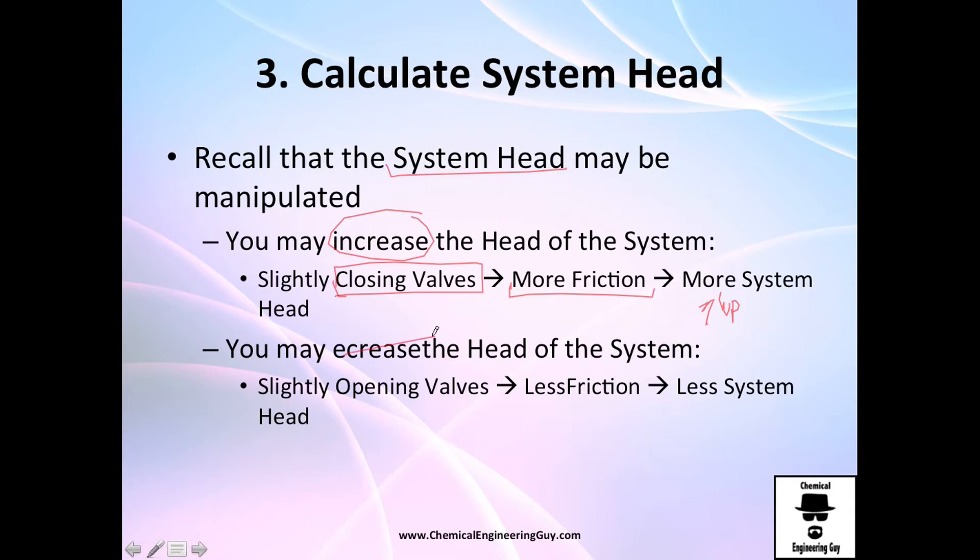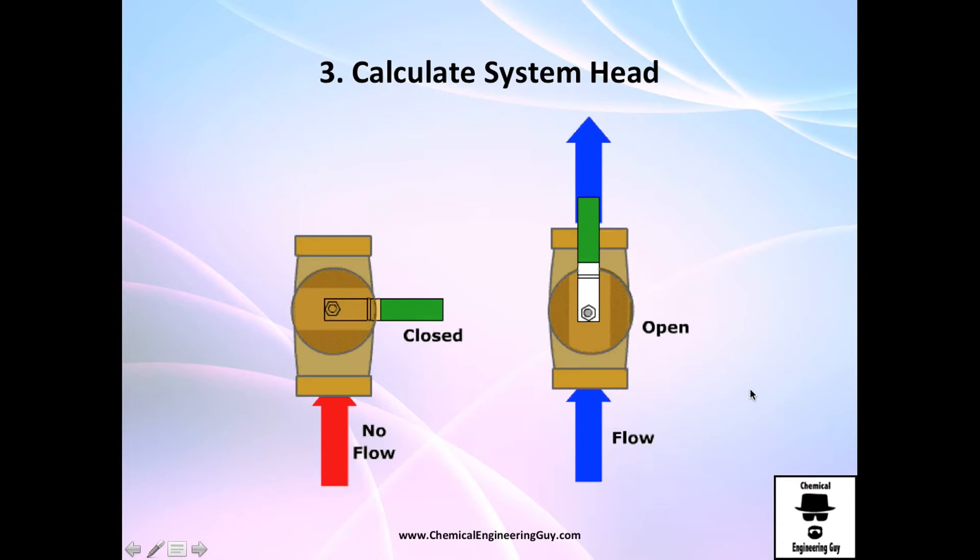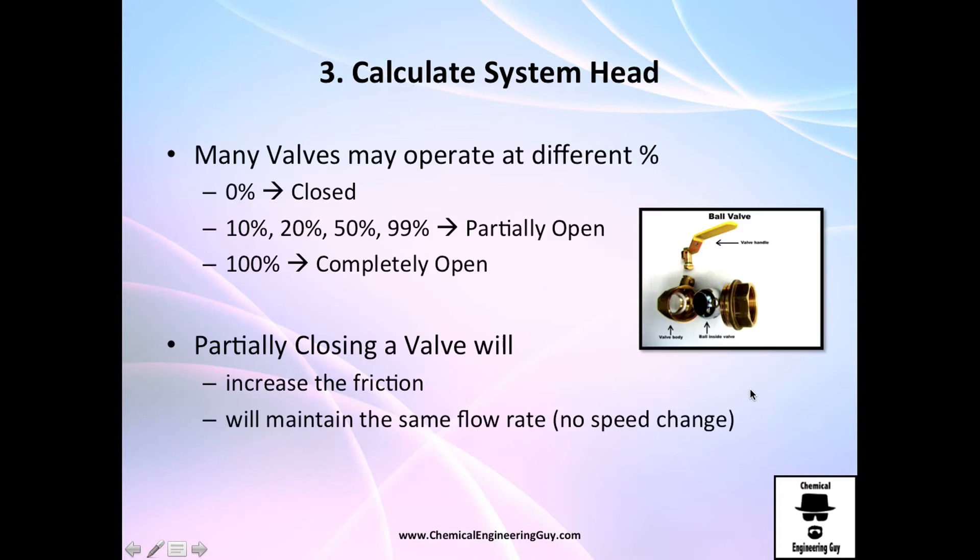You may decrease the head of the system by opening valves - you will have less friction and therefore less head. It's essentially just closing and opening, or partially opening. Actually in the industry, you normally have these partially open valves to control friction.